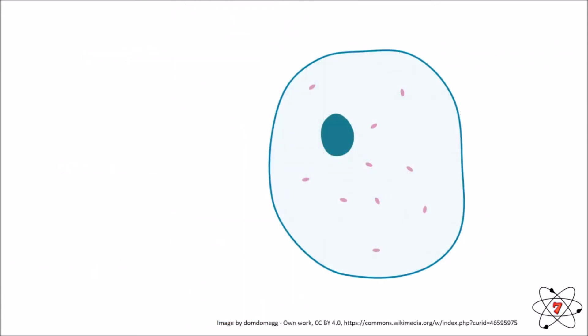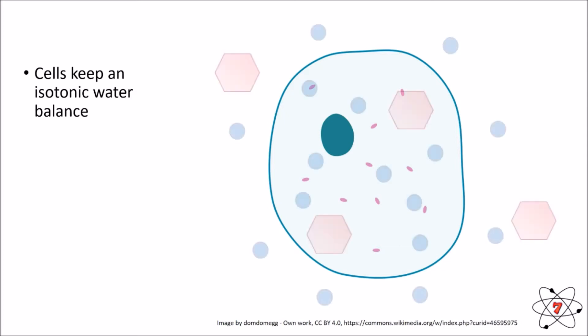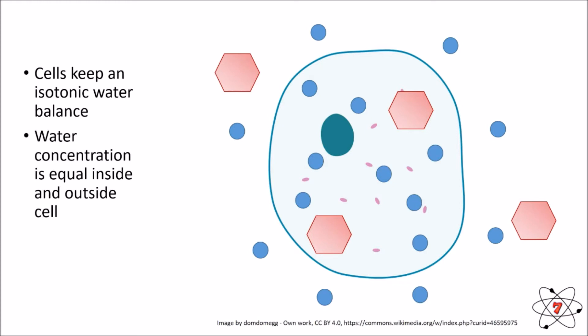Let's look at a practical example. Cells need to keep what we call an isotonic balance of water — this means the amount of water in a cell stays constant. We can see in this example that we have water inside the cell and water outside the cell, each with dissolved minerals, and there's roughly the same amount inside and outside. Water concentration is equal inside and outside the cell, meaning no osmosis or net diffusion will take place.